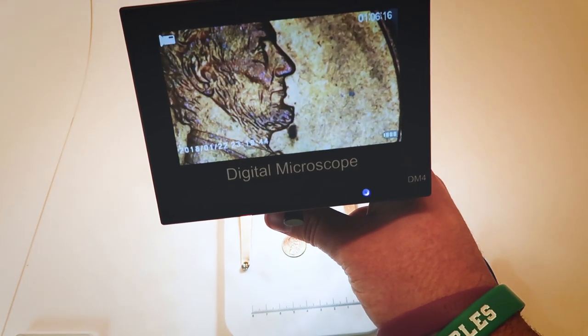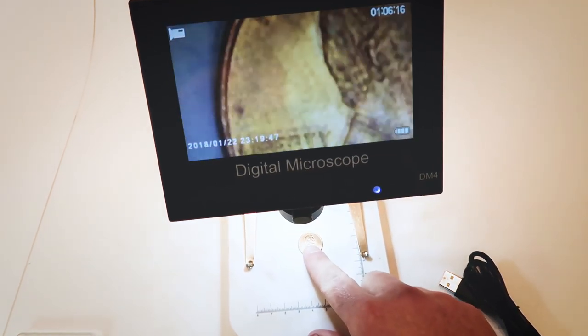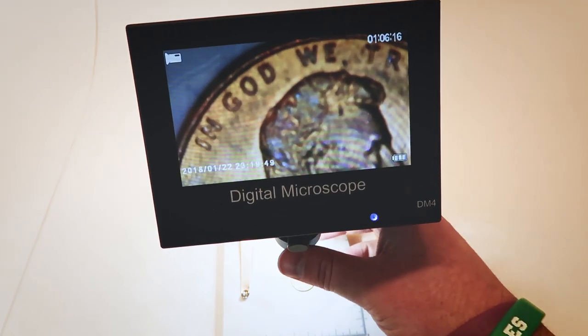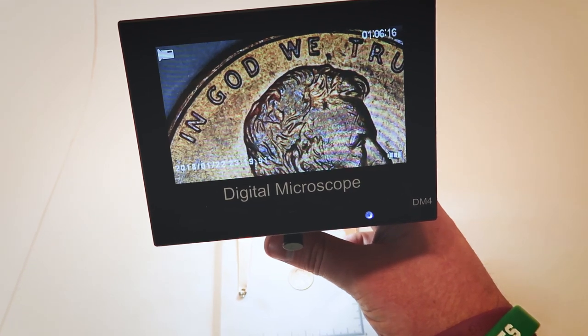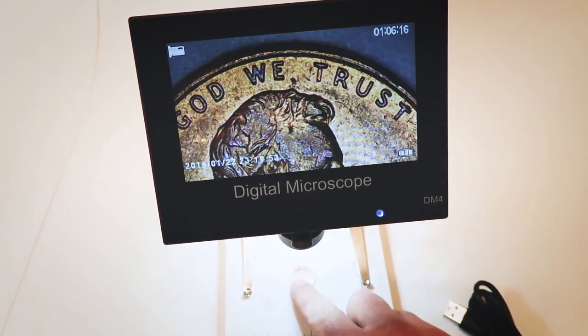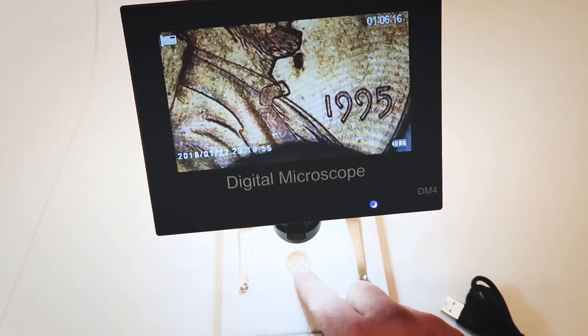All right, there we go. See the Lincoln penny, nice and clear, really really awesome. Actually here, let's get a little more focus. There we go, nice and clear. We can look for that doubling, here's a 1995.